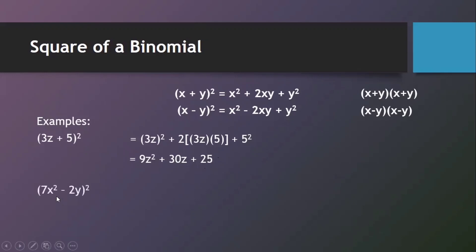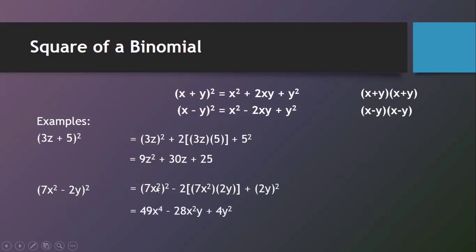Another example: (7x squared minus 2y) squared. We square the first term: 7x squared, all squared. Then subtract twice the product of 7x squared and 2y, then add the square of 2y. Recalling the law of exponents, an exponent raised to an exponent means we multiply: 7x squared, quantity squared, equals 49x to the 4th. Then 2 times 7x squared times 2y equals 28x squared y. And 2y squared equals 4y squared. Final answer: 49x to the 4th minus 28x squared y plus 4y squared.